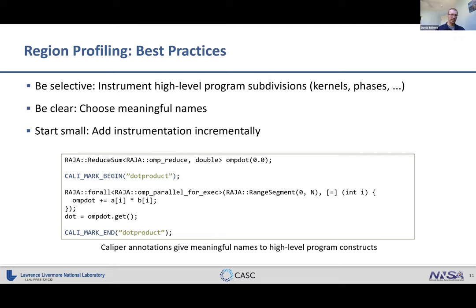Start small — you can add a few instrumentations and then add more as you go. In practice, even in large codes we typically have no more than a few dozen instrumented regions — maybe 20 to 30 in total. Many codes already have their own little timer libraries with instrumentation that can usually be adapted to use Caliper instrumentation instead.